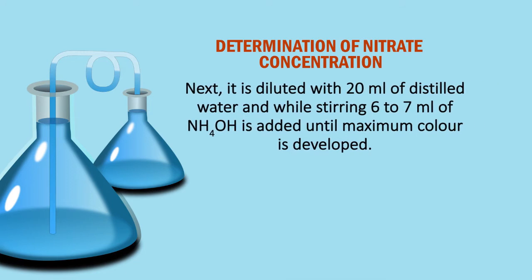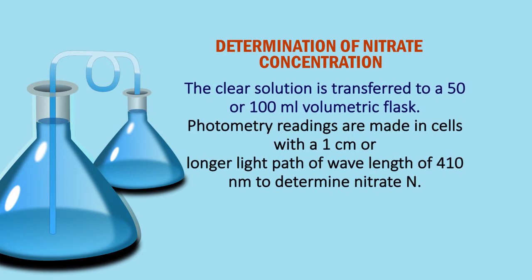Next, it is diluted with 20 ml of distilled water. While stirring, 6 to 7 ml of ammonium hydroxide is added until a magnum color is developed. The clear solution is transferred to a 50 or 100 ml volumetric flask. Photometric readings are made in cells with a 1 cm or longer light path at a wavelength of 410 nm.